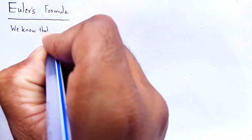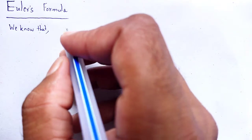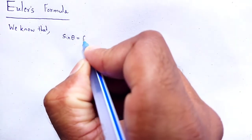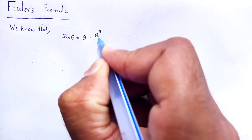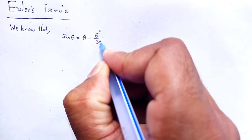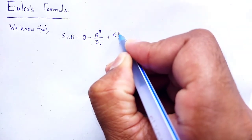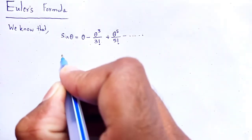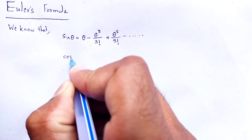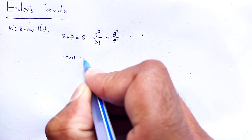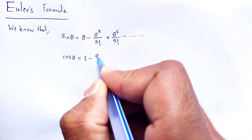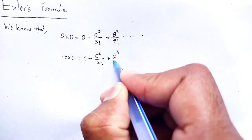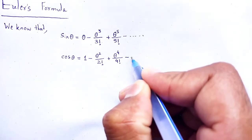We know the Taylor series expansion of the sine function and cosine function. Sine theta is expanded as: theta minus theta cubed divided by 3 factorial plus theta to the power 5 divided by 5 factorial minus dot dot dot. And the expansion of cos theta is equal to 1 minus theta squared divided by 2 factorial plus theta to the power 4 divided by 4 factorial minus dot dot dot.